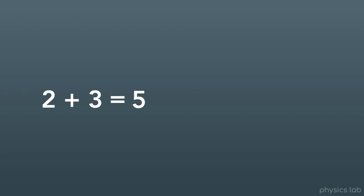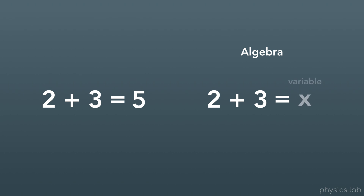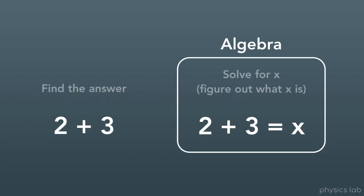But algebra is slightly different. In algebra, when we have an unknown number, instead of leaving that space blank or writing a question mark, we replace that unknown number with what we call a variable. In this case, we're using the letter x as our variable — and note, this is not a multiplication sign. Instead of being told what math to do and just finding the answer, we write out a full equation, put variables in place of numbers we don't know yet, and then we solve for those variables.